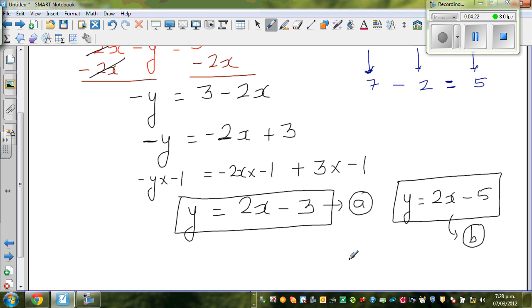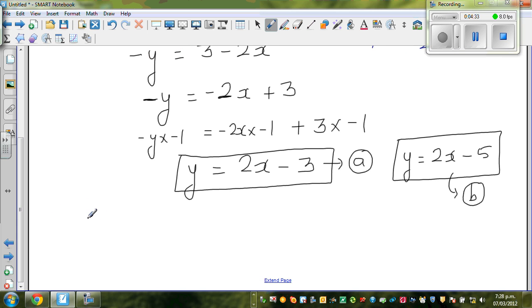So what will happen now? Looking at A and B, A is in terms of y, y equals this, and equation B is also y equals this. So I can say therefore, this is the notation for therefore in maths. If this is y equals 2x minus 3 and y equals 2x minus 5, I can say 2x minus 3 is equal to 2x minus 5.